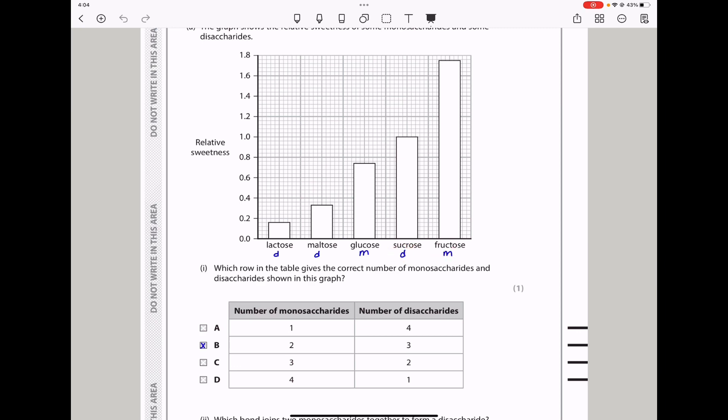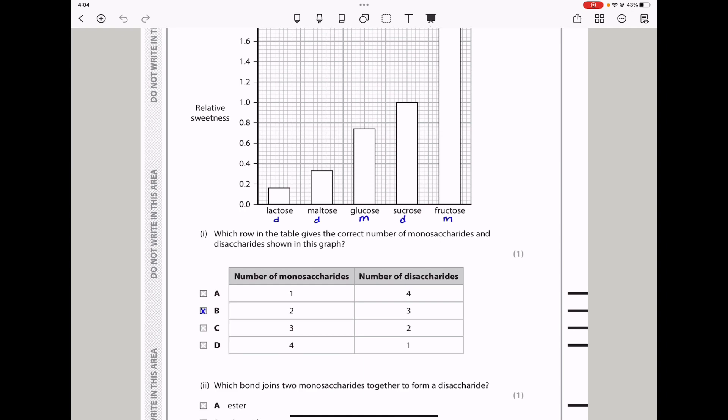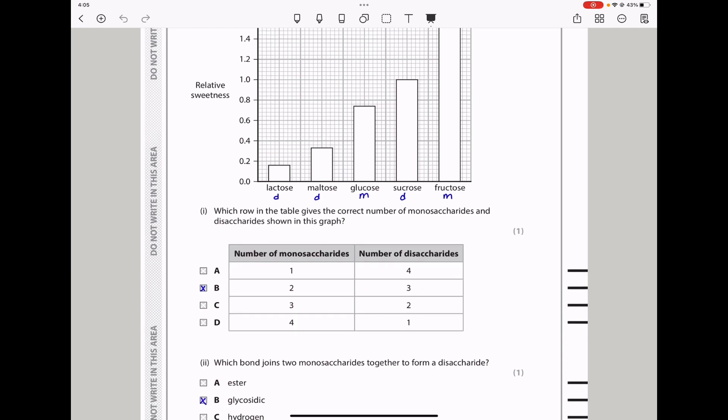From the data here, we can see that the monosaccharide, like fructose, is quite sweet. However, we have one monosaccharide, which is glucose, that is not as sweet as one disaccharide sucrose, but overall we can say monosaccharides are more sweet in comparison to the disaccharides. They say which row in the table gives the correct number of monosaccharides and disaccharides shown in the graph? The number of monosaccharides, of course there are two, and the number of disaccharides, they are three, so B is the answer.